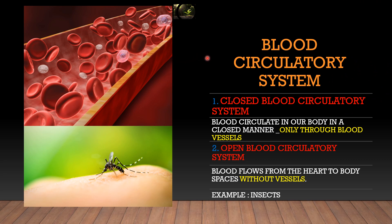There are two different types of blood circulatory systems: closed and open. In a closed blood circulatory system, blood circulates only through blood vessels in a closed manner. This type of system is found in higher animals such as mammals. Since humans are mammals, blood in our body also circulates in a closed manner through blood vessels.